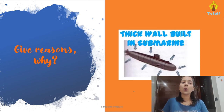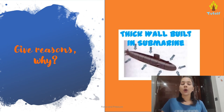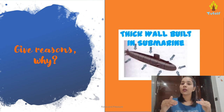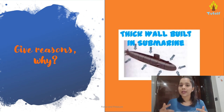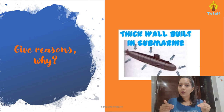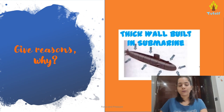First: thick walls in submarines. Submarines are used in deep-sea oceans. As they go down, liquid pressure increases because liquid pressure increases with depth. As the depth continuously increases, the pressure applied on the submarine becomes more and more. So to sustain that high pressure, we need to have thick walls.